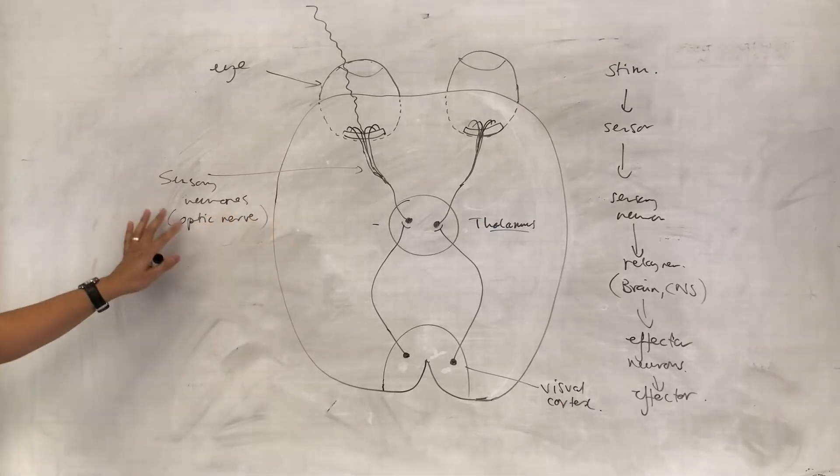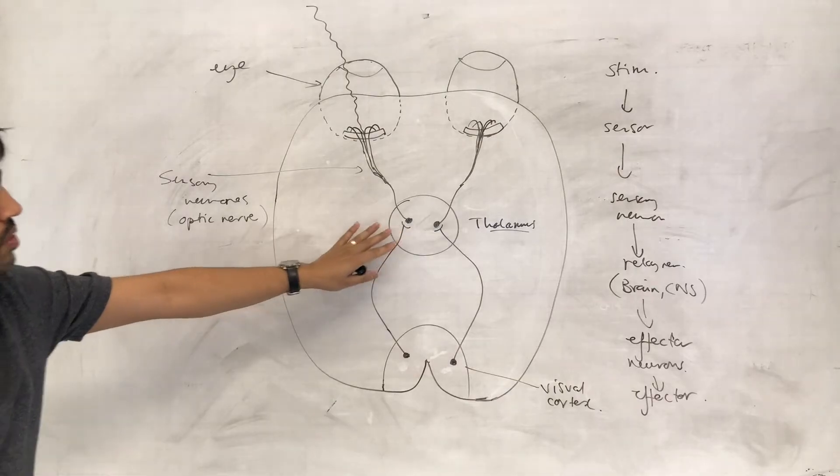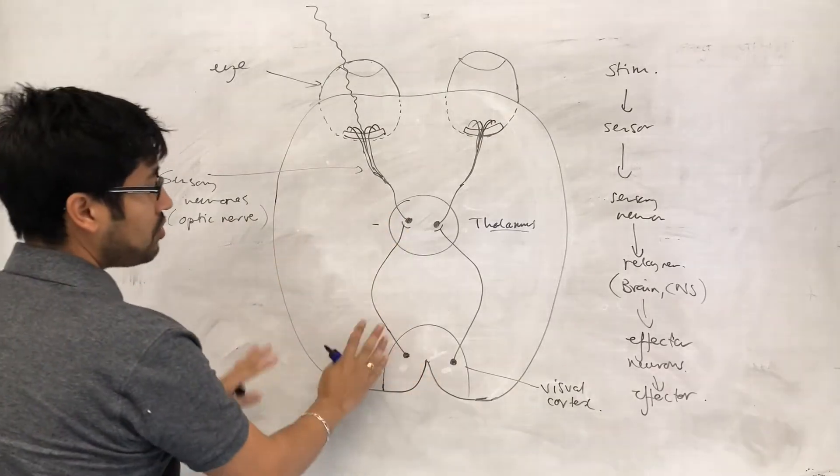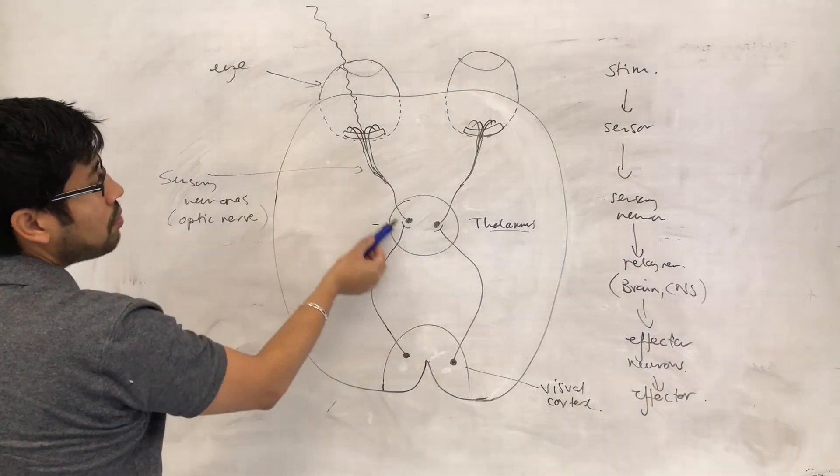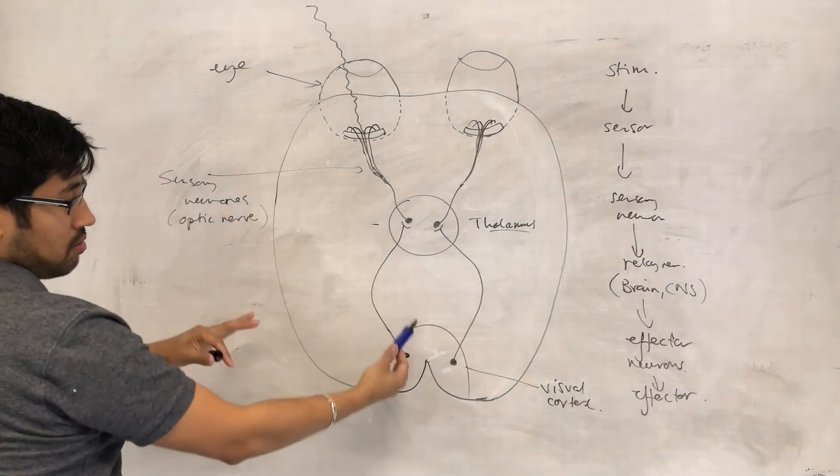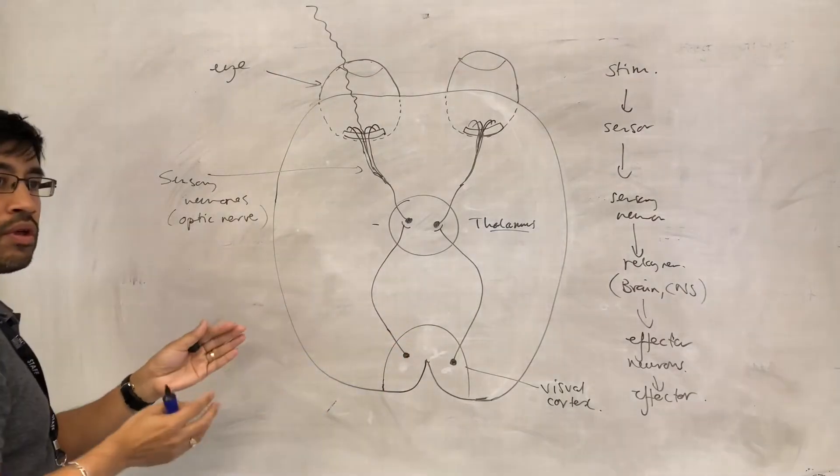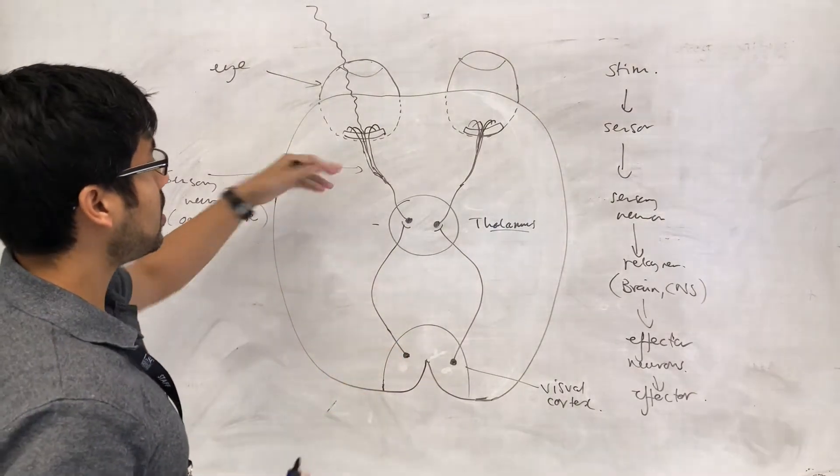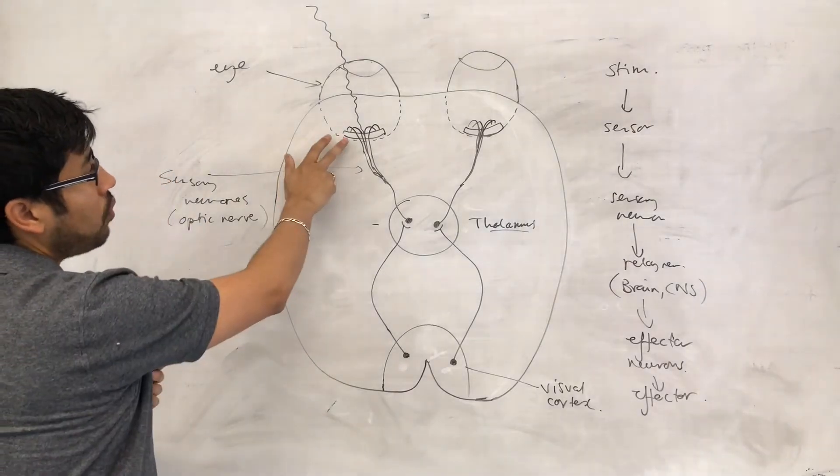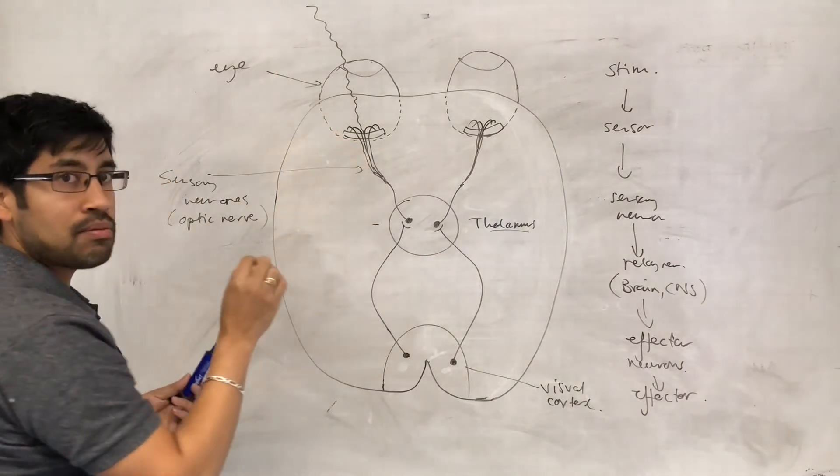Optic nerve, that's right. There, thalamus, processing center. And as you can see, there are a number of synapses there to allow the information. So because what you have to think is, while the impulse is moving down the neuron, it's kind of locked on that part. It's like a train on the tracks.